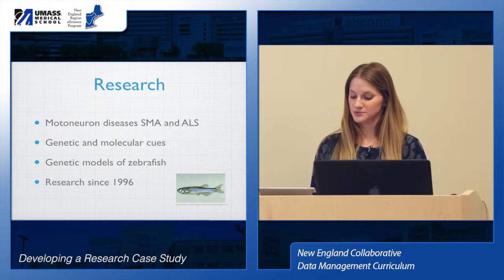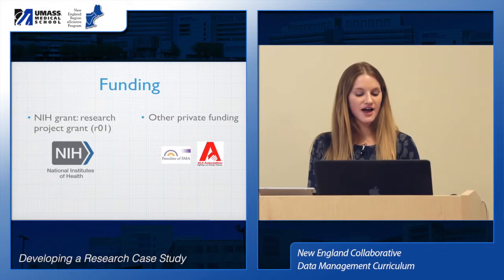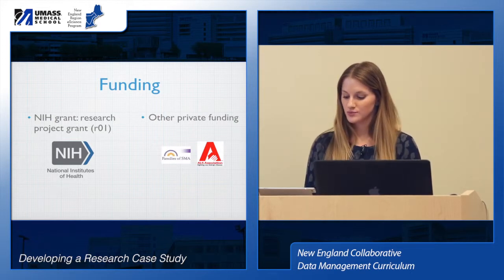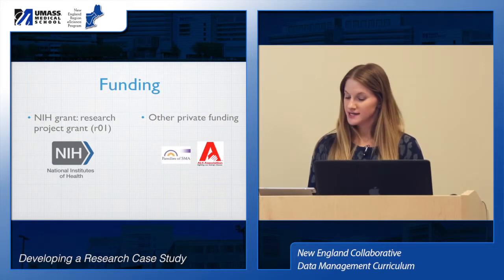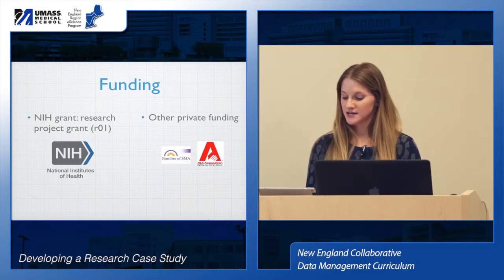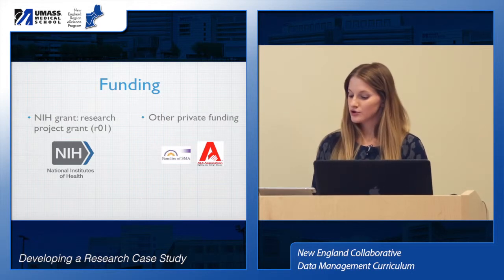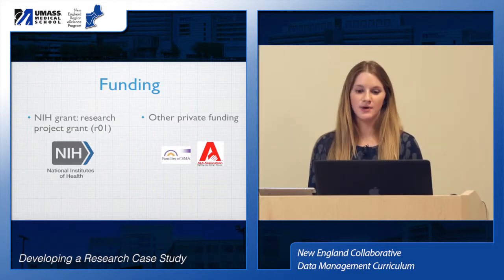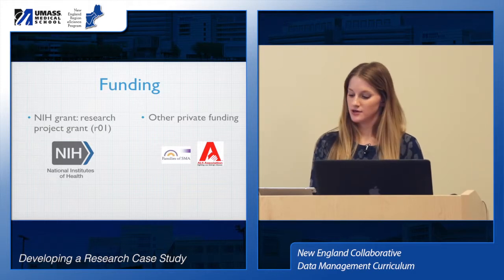The research project has been going on since 1996 and they have received multiple grants from the NIH. They have an NIH R01 award, which is made to support a discrete specified project, and the government is strict about data keeping and can ask to see the data and lab notebooks at any time. NIH has the legal right to audit or examine any research grant award. They are also receiving private funding from SMA and ALS families, foundations, organizations, and private companies as well.